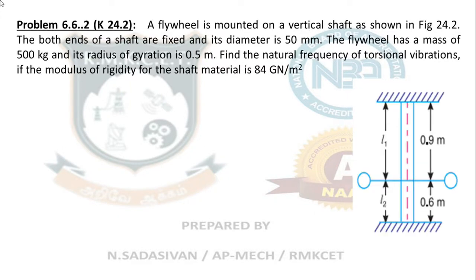Read the question along with the figure. A flywheel is mounted on a vertical shaft as shown in the figure. Both ends of the shaft are fixed and its diameter is 50 mm. The flywheel has a mass of 500 kg and its radius of gyration is 0.5 meter.